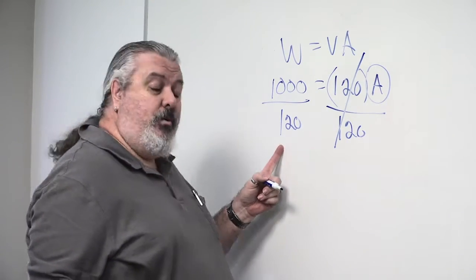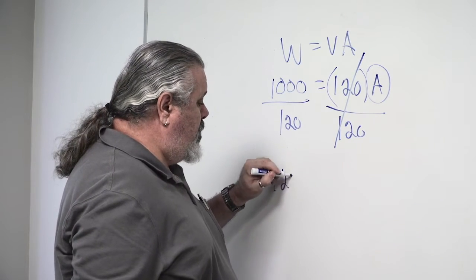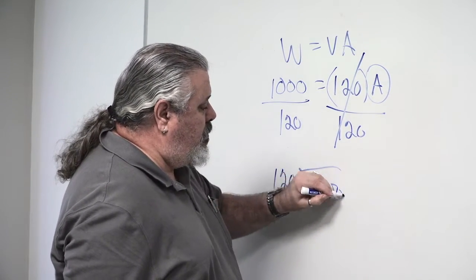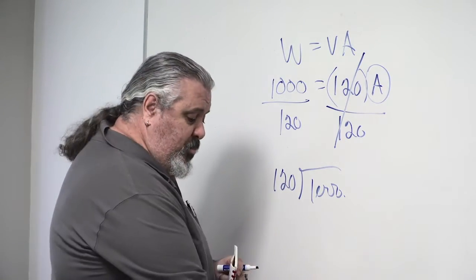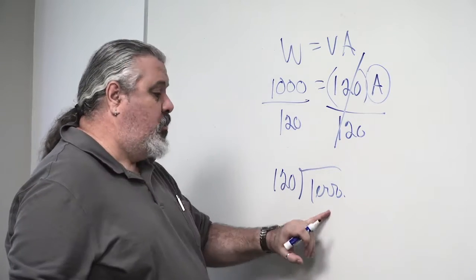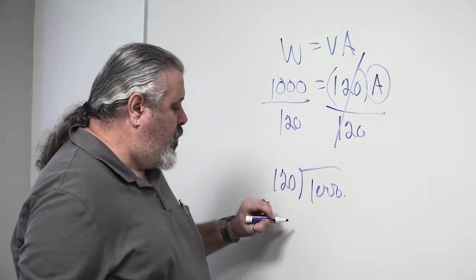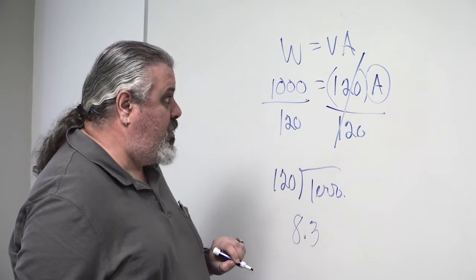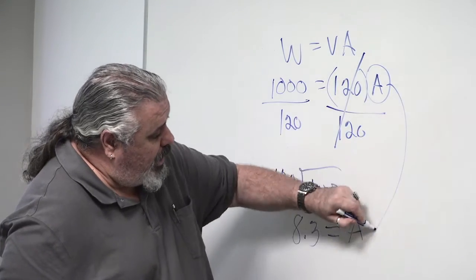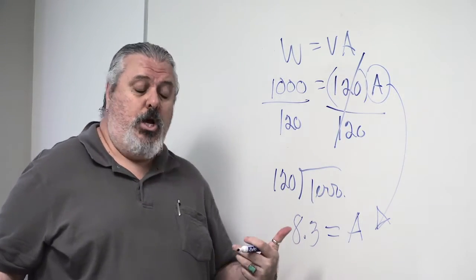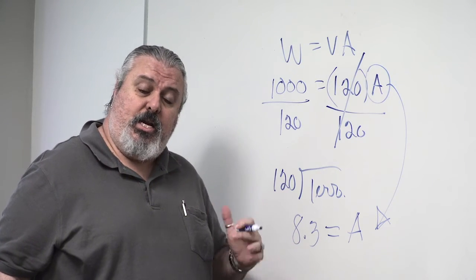So 120 cancels itself out on that side of the equal sign. Very simple, right? Over here, we got 1000 divided by 120. So if we do that basic calculation, we can do it long form like they taught us to do in school, or we can pull out our calculator. When we do this division, we come up with 8.3. And that is equal to A, the variable that we were looking for. So A equals 8.3 amps. And it's as simple as that.